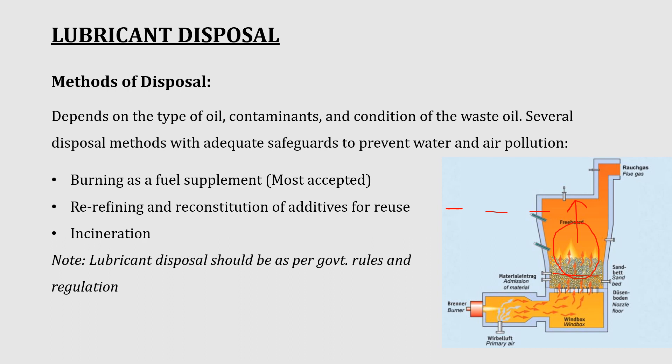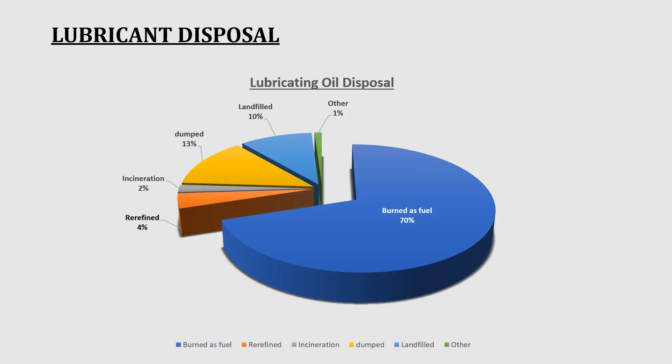According to government rules and regulations, 70% of used lubricating oil is used as a byproduct as fuel, 10% goes to landfill — though landfilling is illegal — 13% goes to incineration, 2% to other methods, and 4% is refined. This is the most recommended method of lubricating disposal. The next topic is the purpose and procedure of changing lubricating oil.